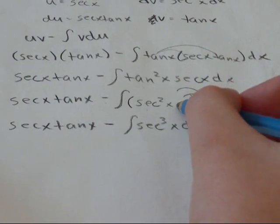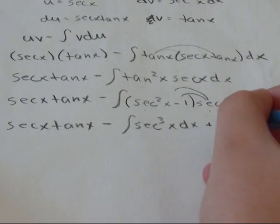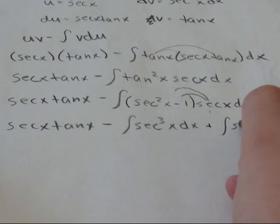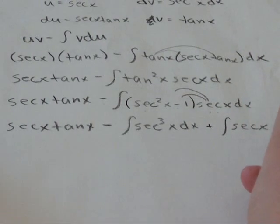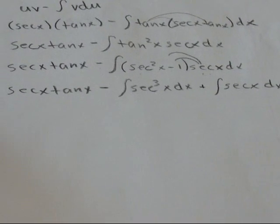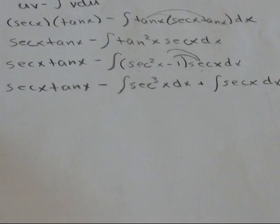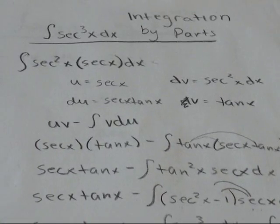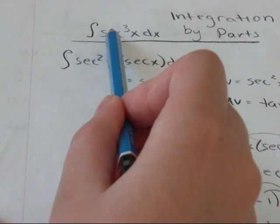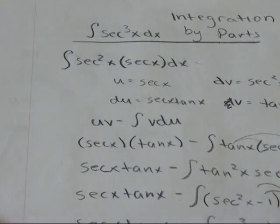And then minus, and the minus from the 1 is going to give us plus the integral of 1 times secant x secant x dx. So, what you'll notice is that we started off having our question is secant cubed x dx equals what?